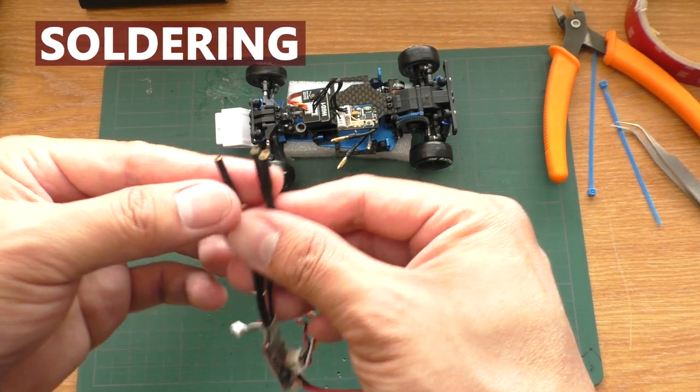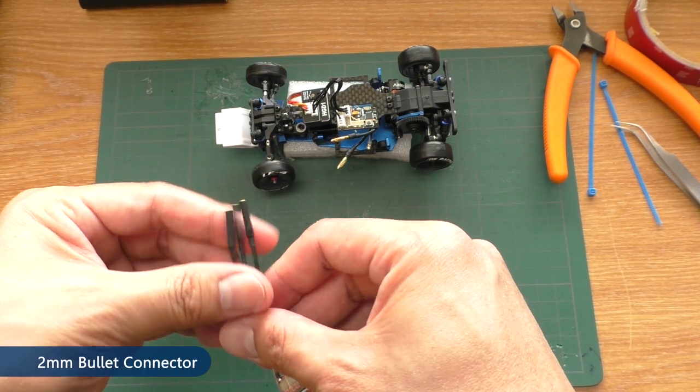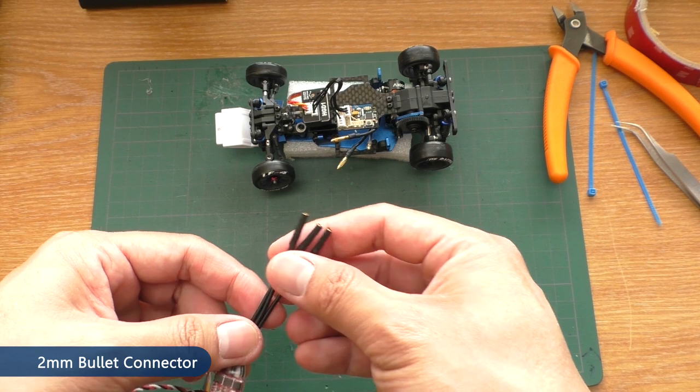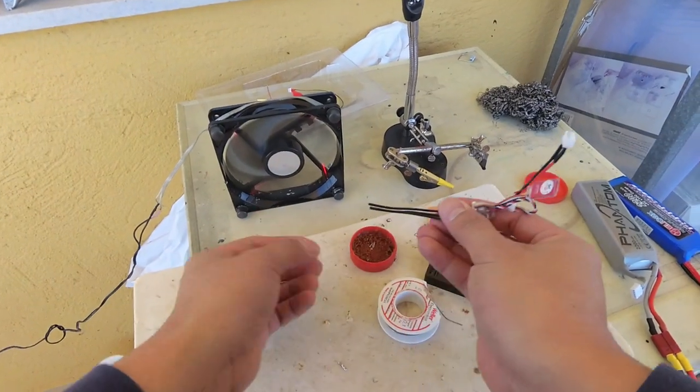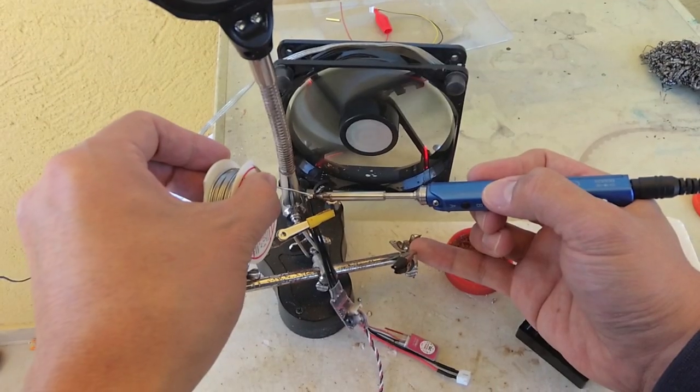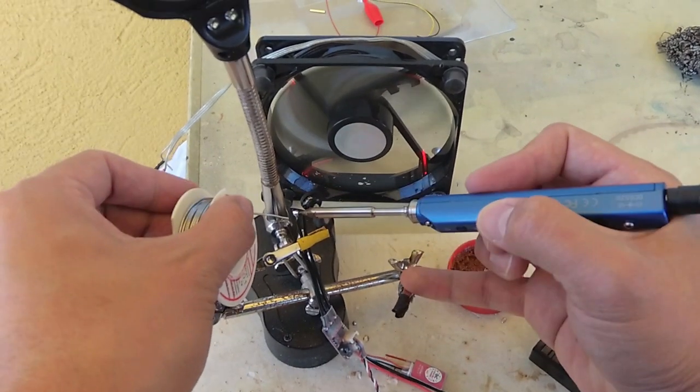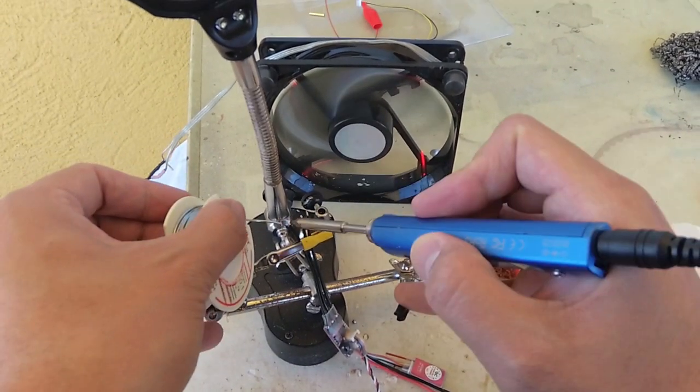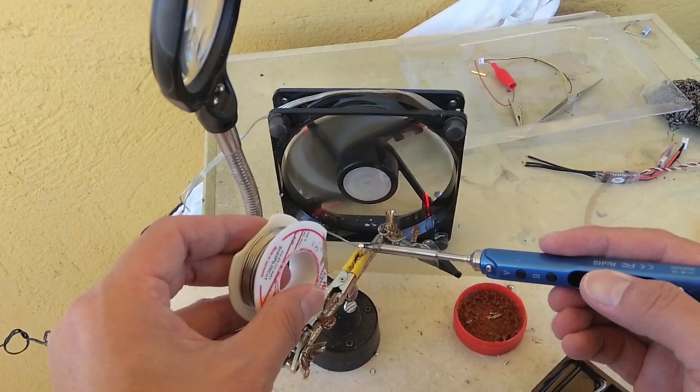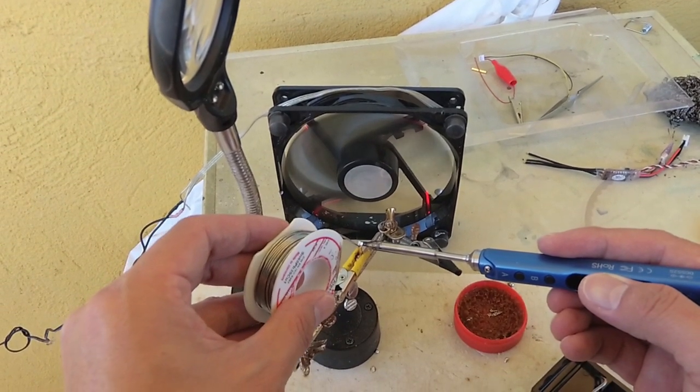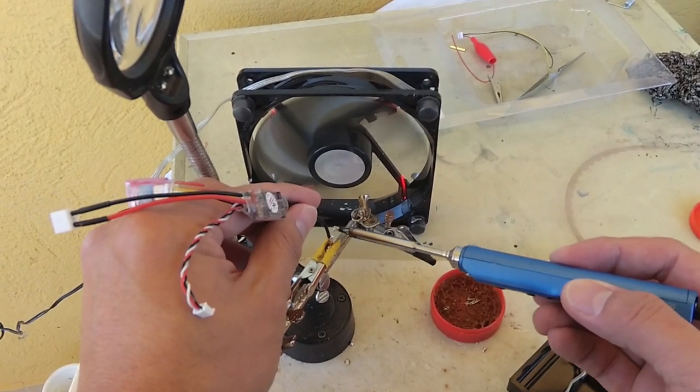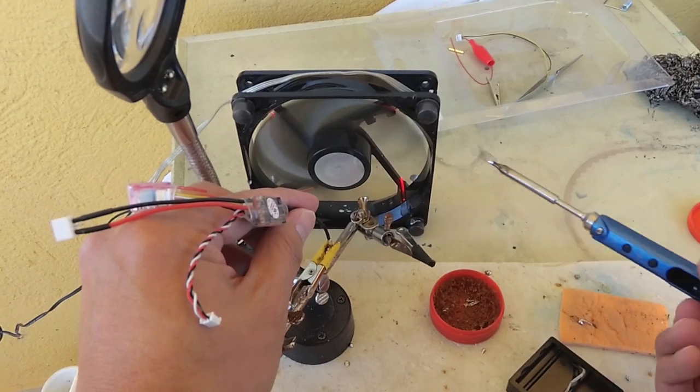The soldering is pretty easy on this one because I use the banana or bullet plug - this is two millimeter bullet plug. First what you need to do is strip and tin the wires. Then on the connector you can heat it from the outside and tin the inside. Now heat it from the outside, the solder is going to melt, and now you can dip the wire in and that's pretty much it.